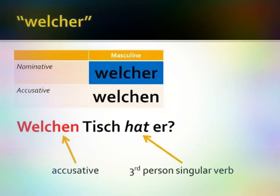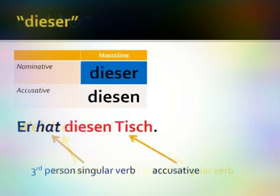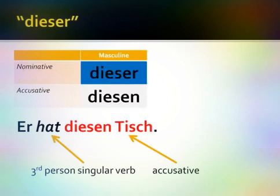I can respond to 'Welchen Tisch hat er?' by saying, er hat diesen Tisch — he has this table. Again, I've switched the word order because I'm no longer asking a question. I put the actor er in the first position, then move the direct object — the thing that receives the action, in the accusative case — toward the end of the sentence.